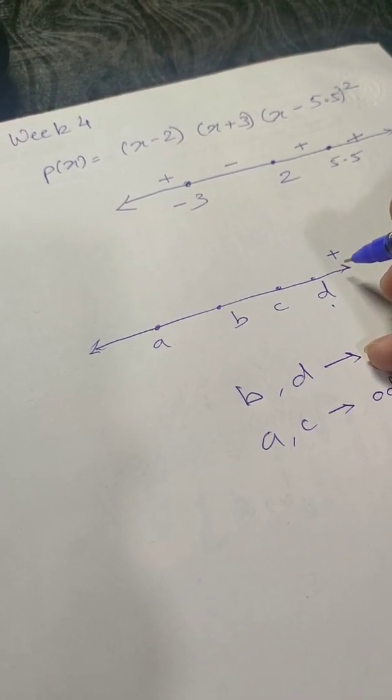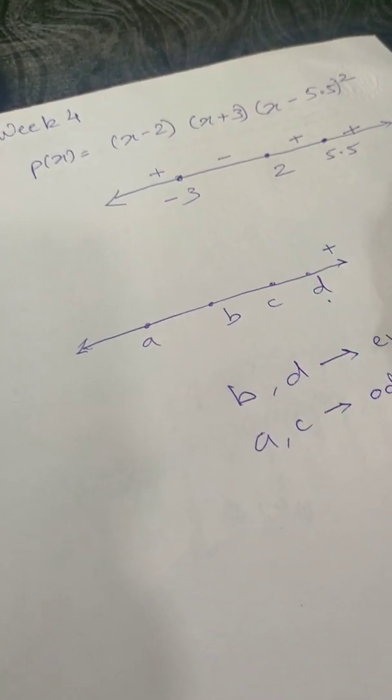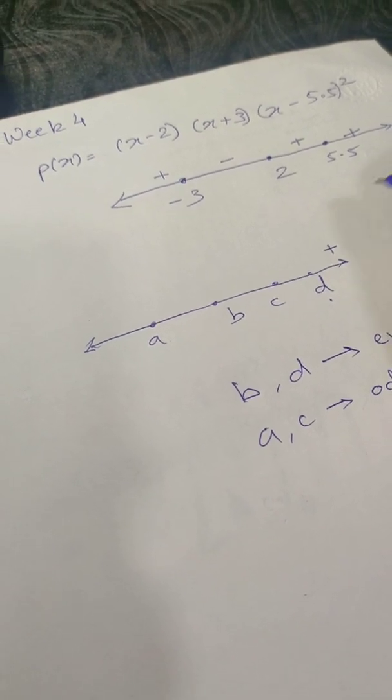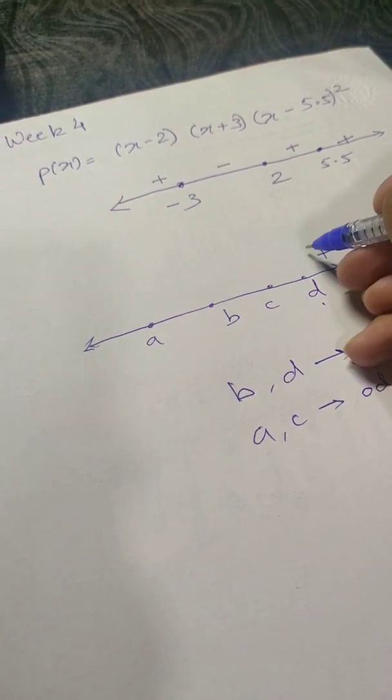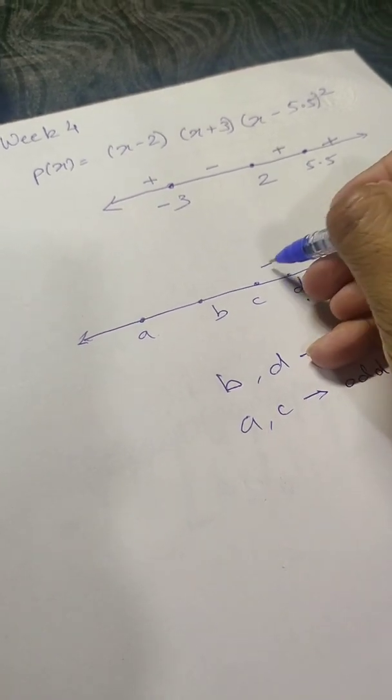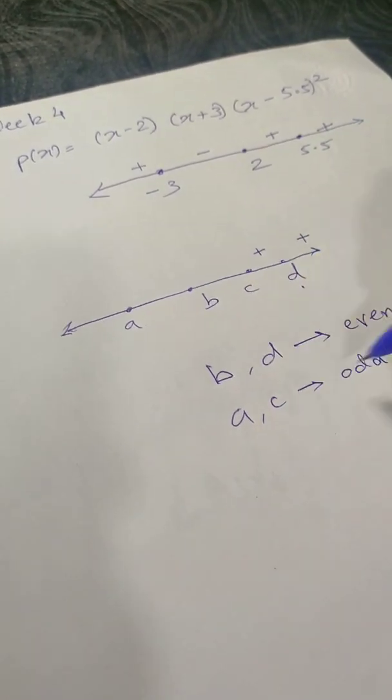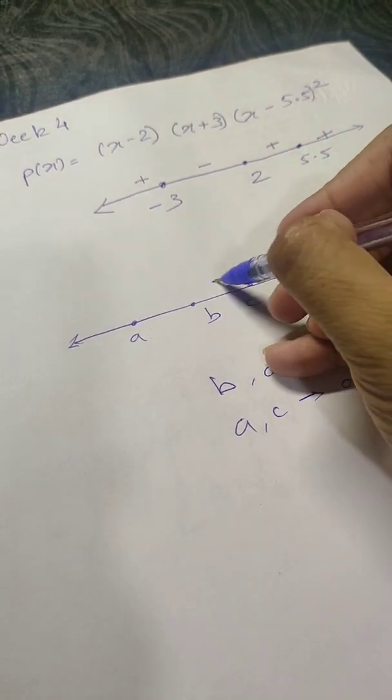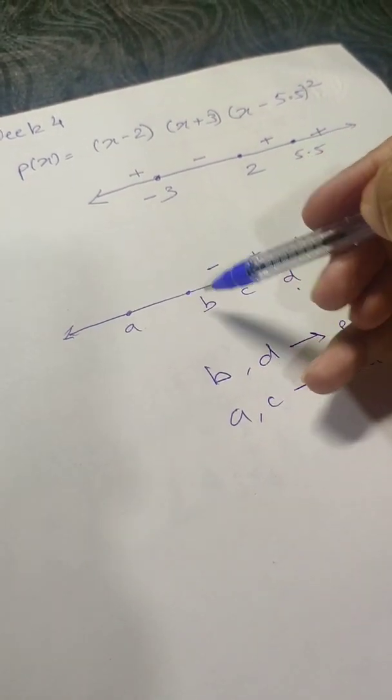Since d is an even multiplicity, we come here and the sign of the value will be same. Now since c is an odd multiplicity, the sign will change.